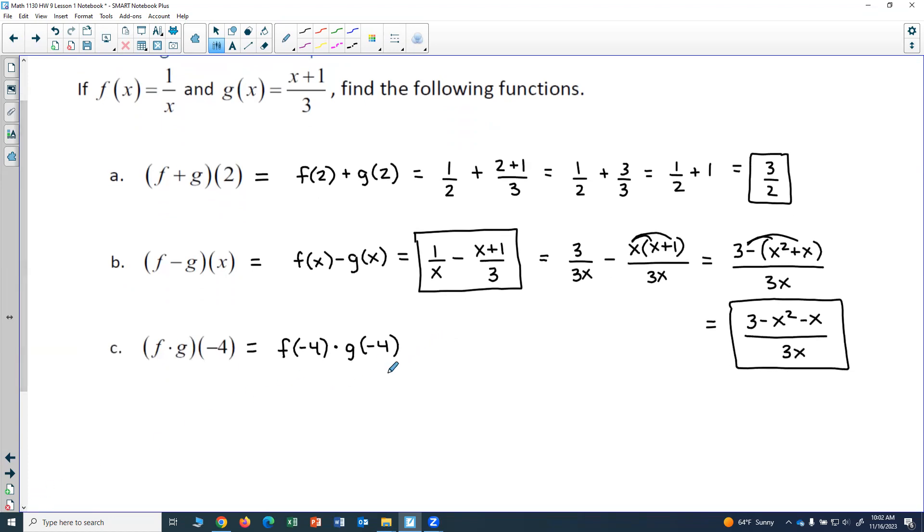So f of negative 4 would be 1 over negative 4. And g of negative 4 would give me negative 4 plus 1 divided by 3. So now we just want to simplify. So I end up with negative 1 fourth times negative 4 plus 1 would give me negative 3 over 3.